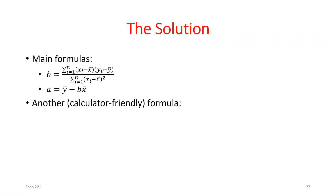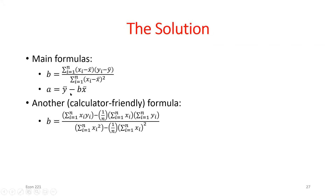Solving those two equations gives us the formula for the A and B values that produce the line of best fit. Notice it uses the data — every single observation's X value, the difference between the actual X value times that observation's Y value, minus the average Y. Don't worry about these equations too much because we have a powerful tool in Excel that does all this work for us. But this highlights that we're really just coming up with estimates based off the data set we have.